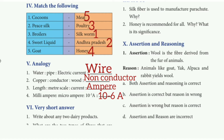Analogy. First one: water is to pipe as electric current is to wire. Second one: copper is to conductor as wood is to non-conductor. Third one: length is to meter scale as current is to ampere. Fourth one: milliampere is to 10 minus 3 ampere as microampere is to 10 minus 6 ampere.